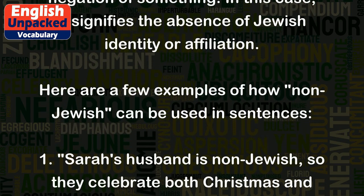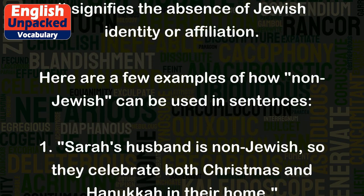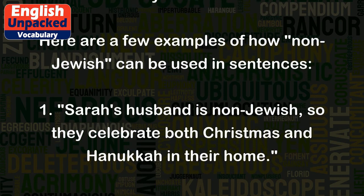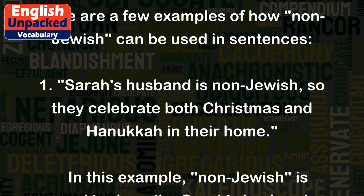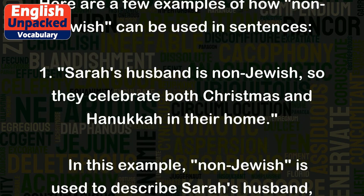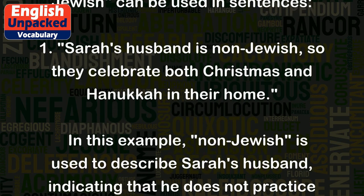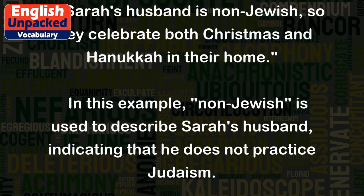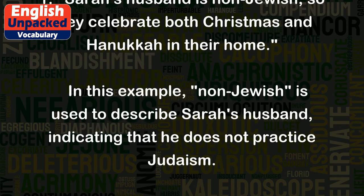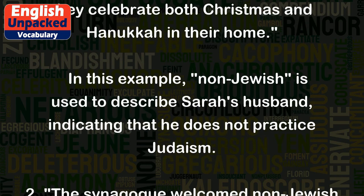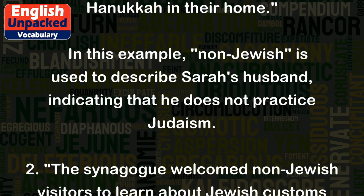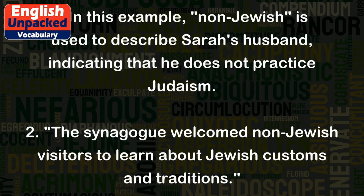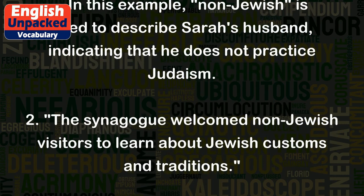Here are a few examples of how non-Jewish can be used in sentences. 1. Sarah's husband is non-Jewish, so they celebrate both Christmas and Hanukkah in their home. In this example, non-Jewish is used to describe Sarah's husband, indicating that he does not practice Judaism.